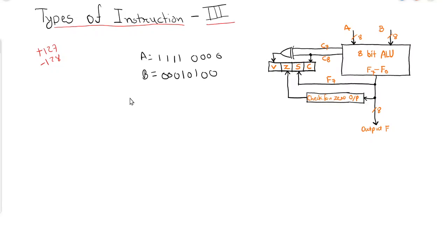If we perform the subtraction A minus B, how can we perform the subtraction? To perform the subtraction, we will take 2's complement of B and then add it to A.